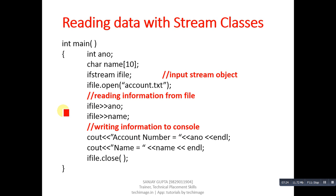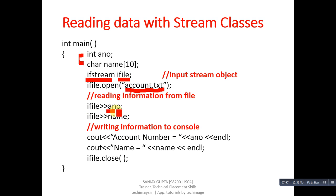This next program reads data with stream classes — it reads data from a file and displays it back on the console. Again two variables are declared. This time an ifstream object ifile is created opening account.txt in read mode. Through ifile we read account number and name from the file, and through cout that information is displayed on console. ifile.close closes the file. When executing this program you don't need to enter anything; account number and name will be displayed automatically from the file.